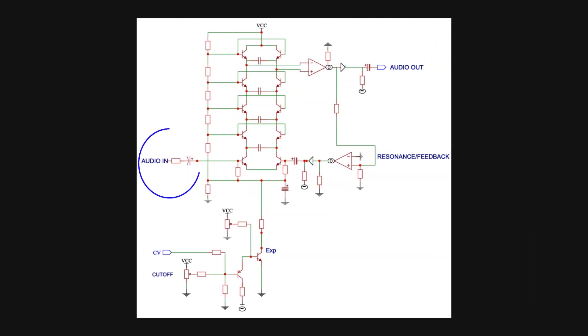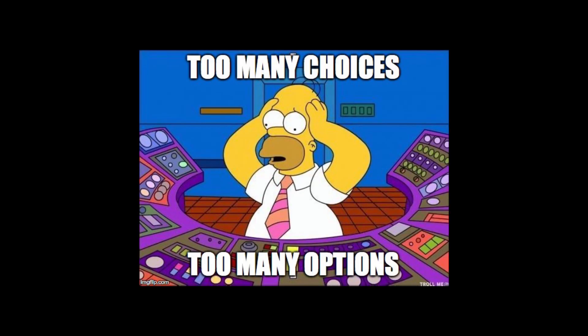A ladder filter is made up of the following building blocks: the audio input, the ladder, the voltage control, the output, and the feedback or resonance. Now all these blocks present options for the designer to tweak the response of the filter to their own taste.